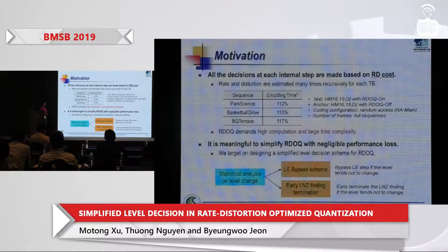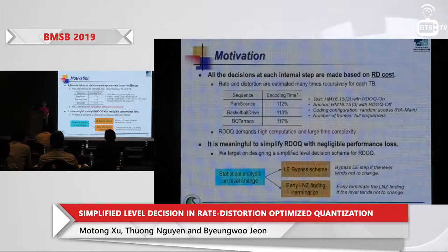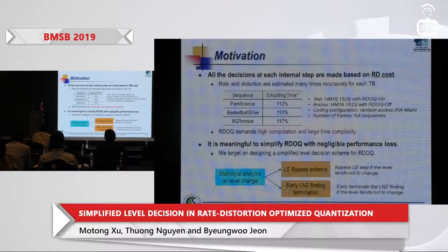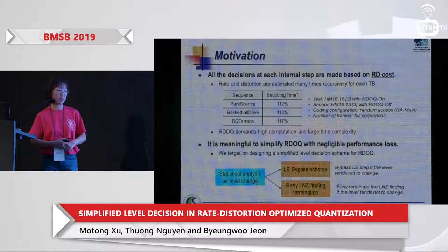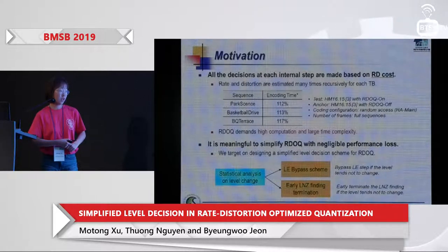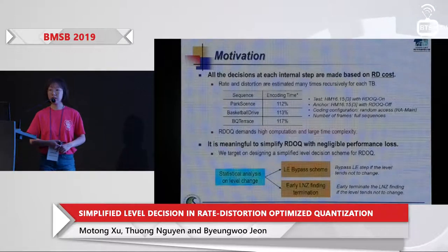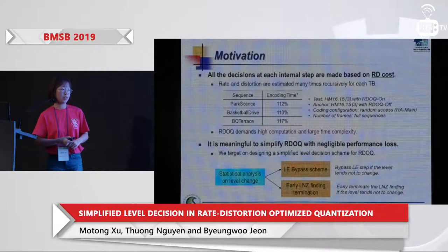It is therefore very meaningful to design a simplified RDOQ scheme that does not affect coding performance too much. In this work, we target designing a simplified level decision scheme for RDOQ. We first carried out statistical analysis on the level change, then developed a level estimation bypass scheme, and also discussed early termination of the LNZ step.